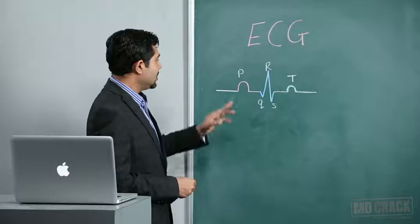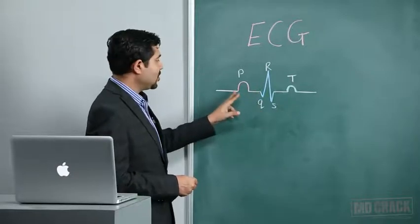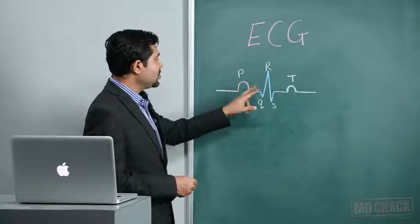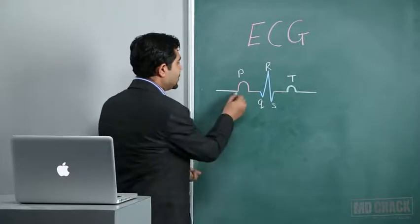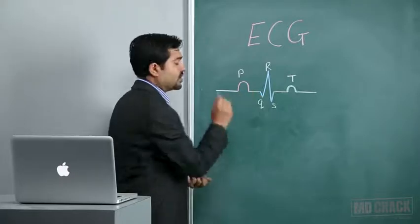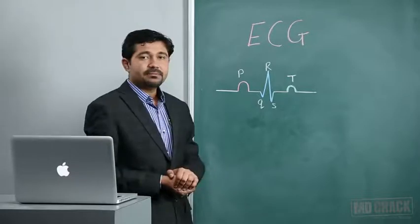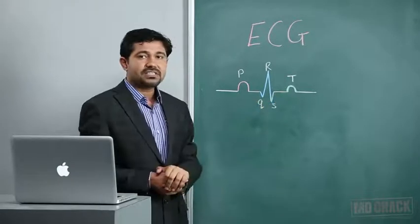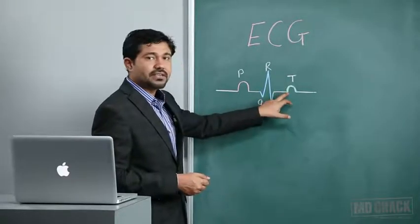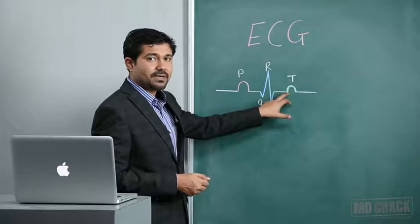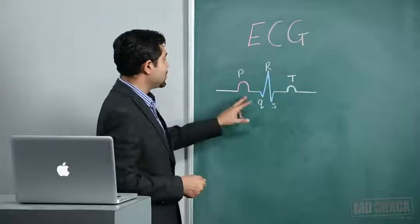The next important thing to remember is the PR interval. What is the PR interval? It is from the starting of the P wave to the starting of the QRS complex - from exactly this point to this point. Then the next important segment is the ST segment. What is the ST segment? End of QRS to starting of T is called the ST segment.